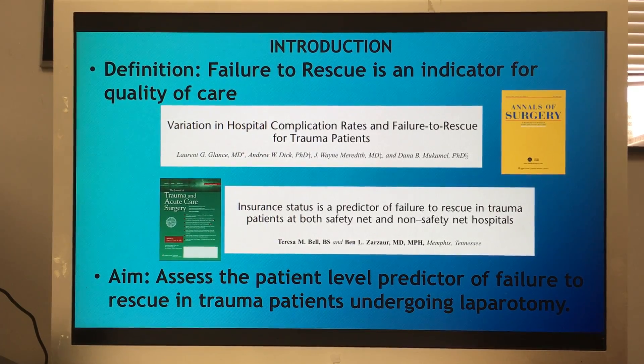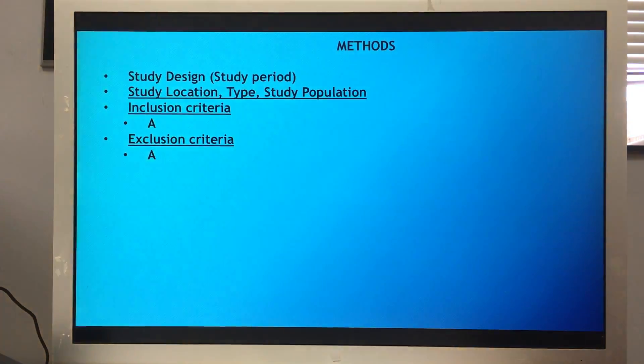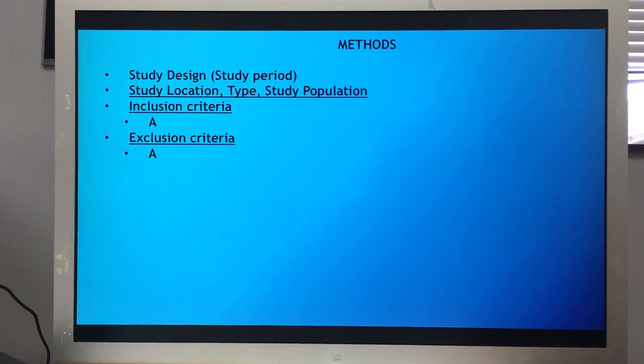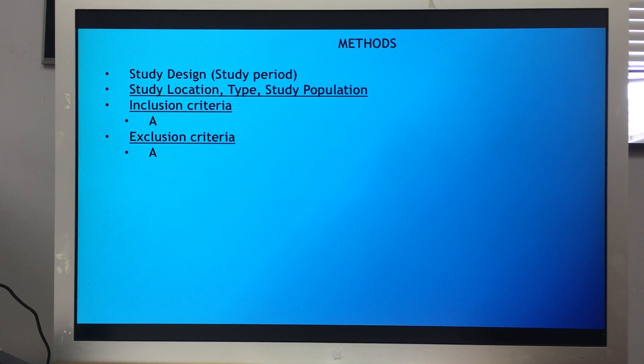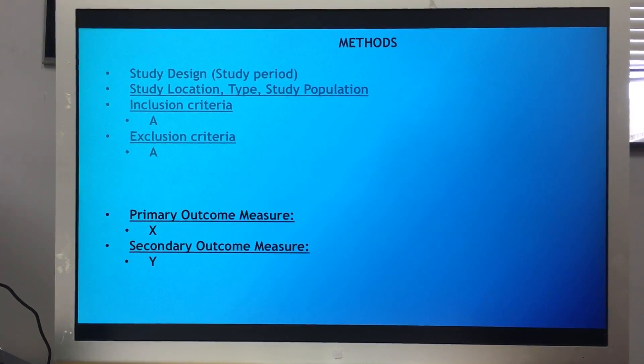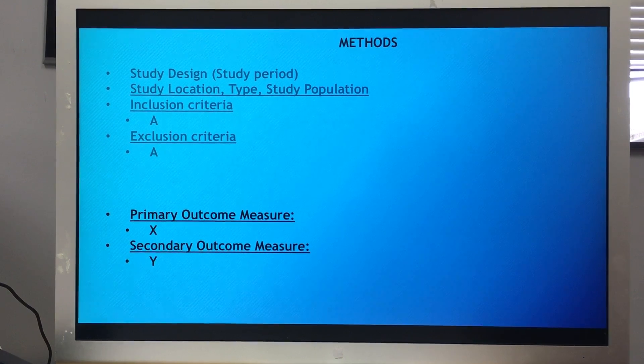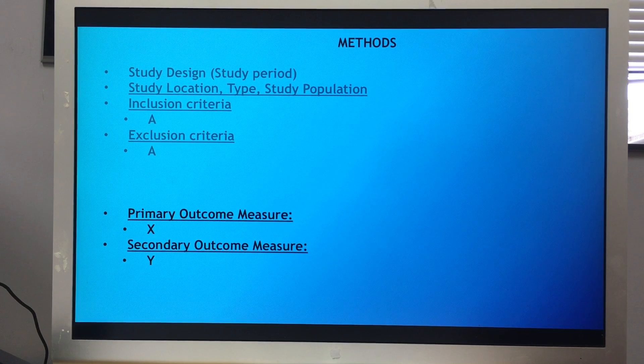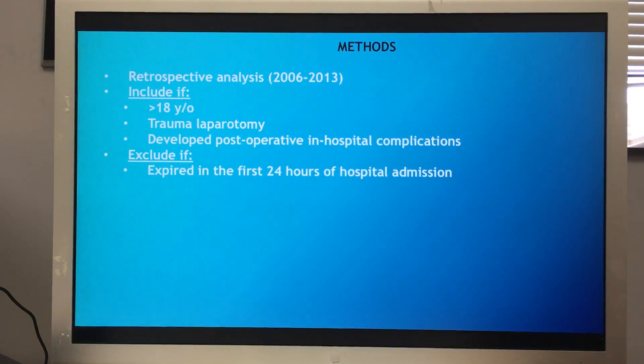As you move forward, this brings us to your methods. Methods: you have study design, location, type of study, study population, and I like to use inclusion and exclusion criteria. Then you can bring in your primary outcome measures and your secondary outcome measures. You do not need to state your statistical tests here.